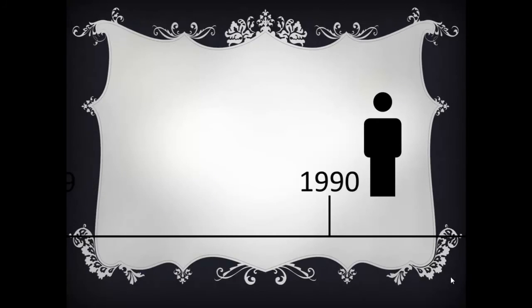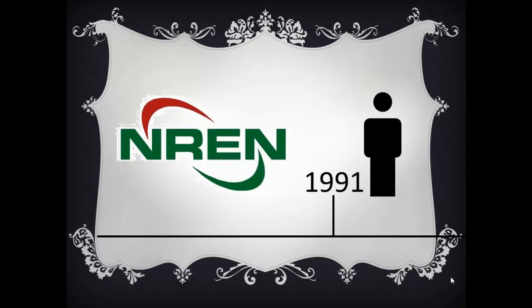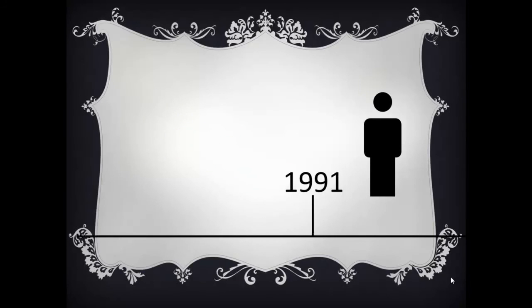In 1990, Merit, IBM, and MCI formed T3 lines which were capable of carrying 45 megabits per second of data. February 28, 1990, ARPANET hardware was removed. In 1991, the National Science Foundation NSF established a new network. In 1992, World Wide Web was released.